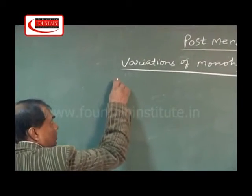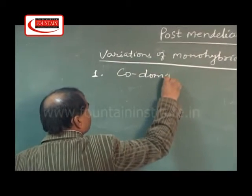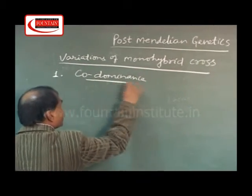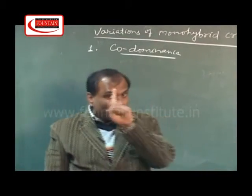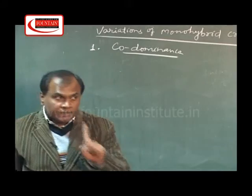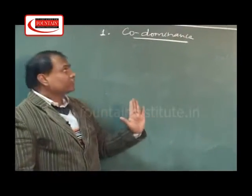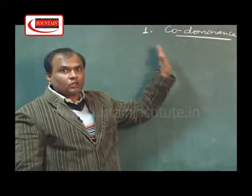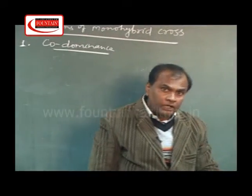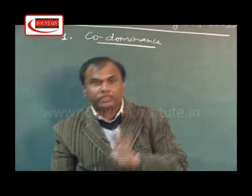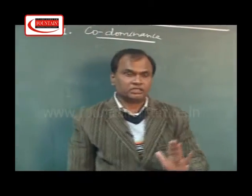The first variation is called co-dominance. Here, Mendel's monohybrid phenotypic ratio of 3:1 is going to be revised. Co-dominance means when both the alleles of a pair express themselves equally in the heterozygous condition, this is called co-dominance.